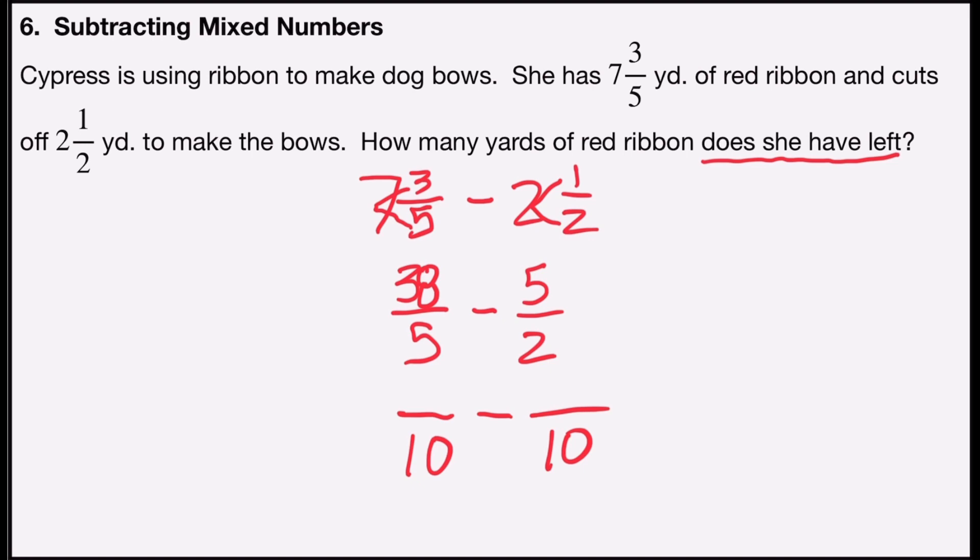Now I'm going to rename the numerators. Five times what number is ten? Well obviously it's two, so I'm going to multiply by the form of one, two over two. So my new numerator, two times thirty-eight is seventy-six. So thirty-eight fifths is the same thing as seventy-six tenths.